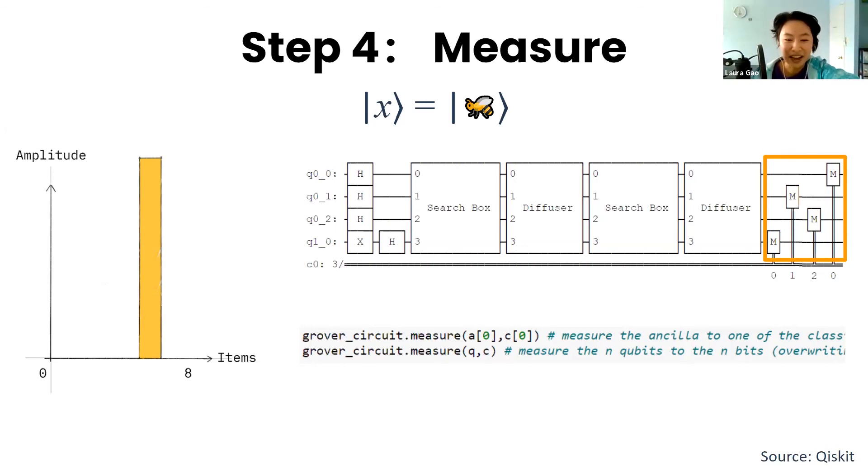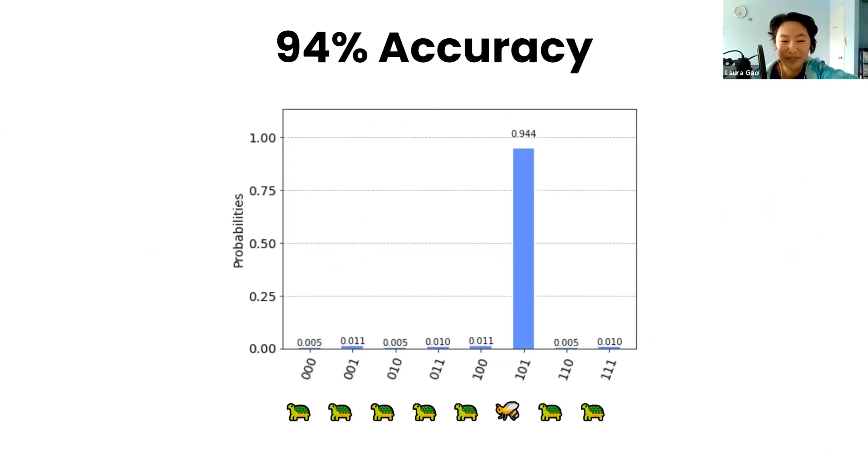Step four is just to measure the wave. These are the results from my actual quantum circuit. There was a 94% of the time we do get the bee. Now I'm able to find my bee, I can send this to my friend and I'll have good luck for eight years.